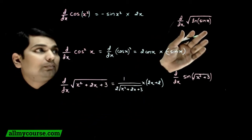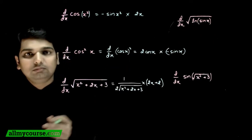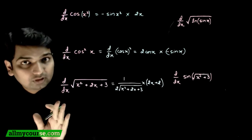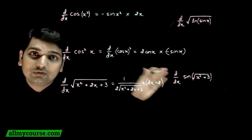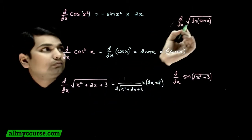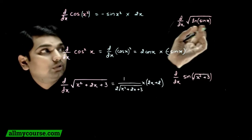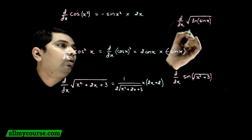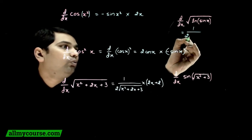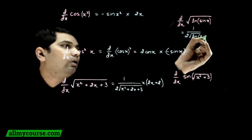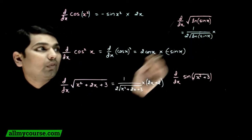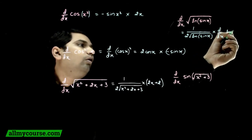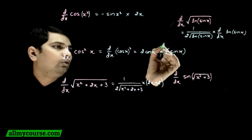Agla example thoda interesting hai: differentiation of √(ln(sin x)). To yeh f of g nahi hai, f of g of h(x) hai — ab isko kaise differentiate kiya jaye? Process same hai, isko chain rule kehte hain — f of g of h of i of k of, kitna bhi lagaate chale jaayein, process same rahega. You don't have to worry about kya root ke andar hai — sabse bahar kaun sa function hai root. Sabse pehle sabse bahar wala function differentiate karoge. Root ka differentiation hoga 1/(2√(ln(sin x))), multiplied by differentiation of stuff, jo hai ln(sin x).